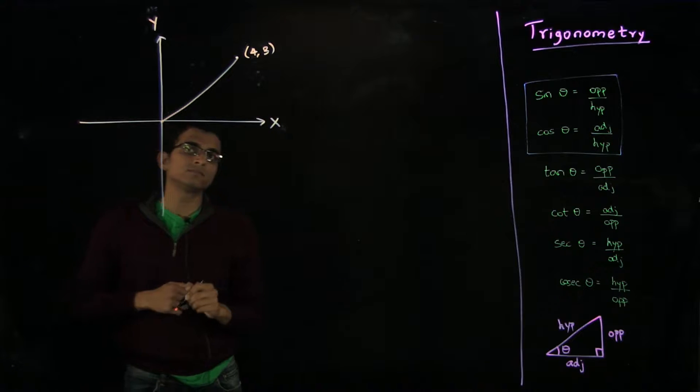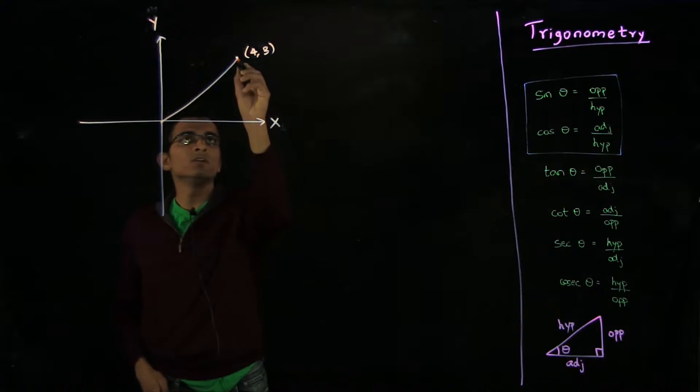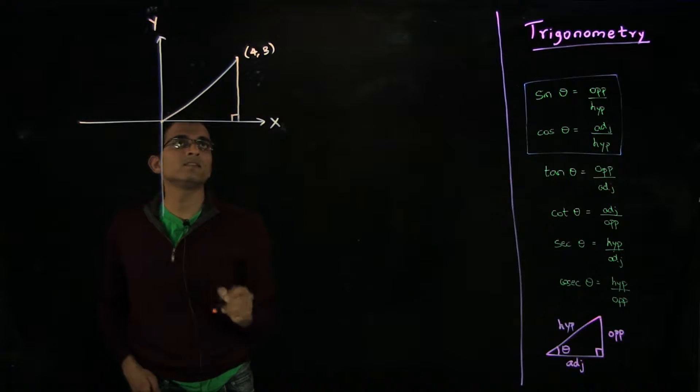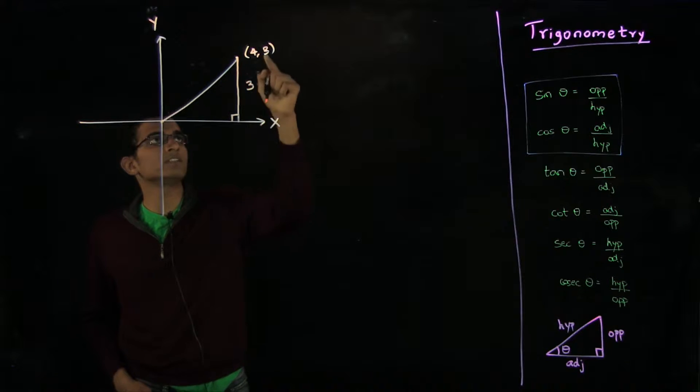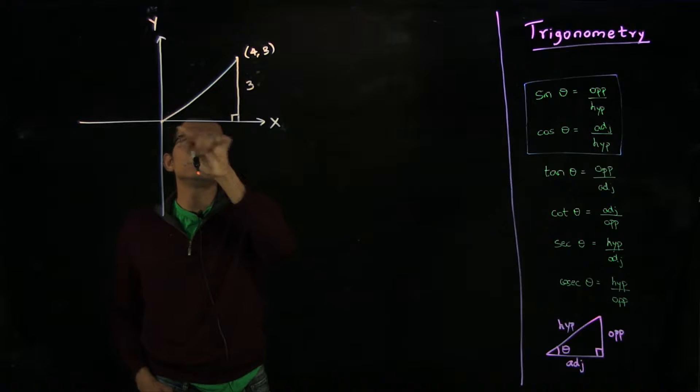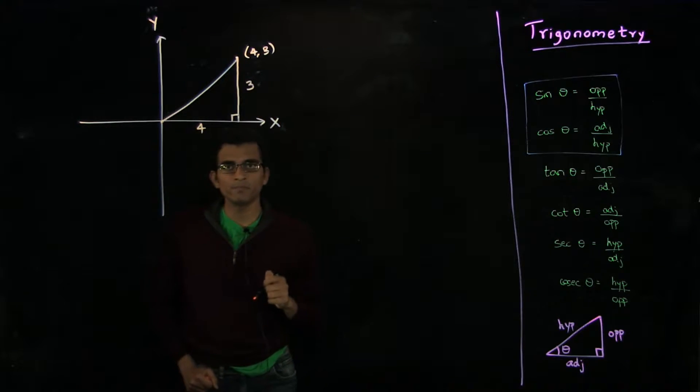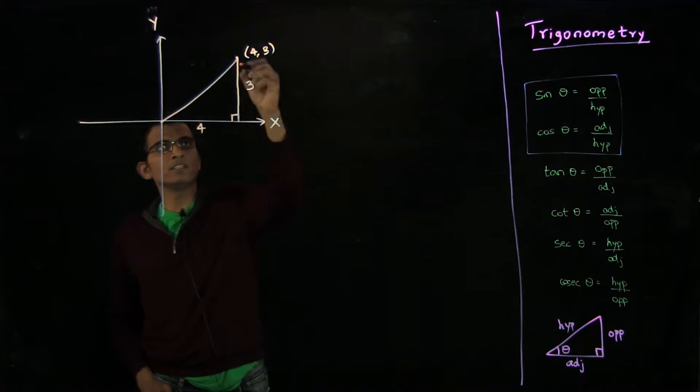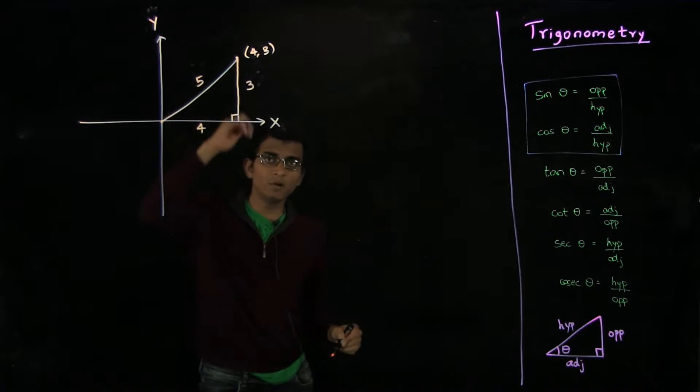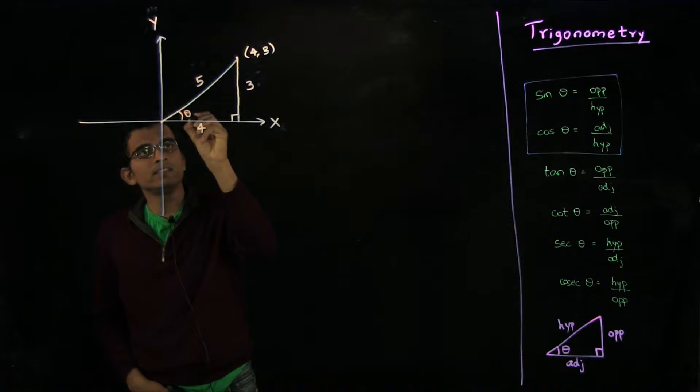Now we can connect this point to the origin. Looking back on the trigonometric ratios, we can drop this perpendicular on the x axis and note that this thing is 3, which is the y coordinate of this point, and this length is 4, which is the x coordinate. By Pythagoras theorem, you can see that the length of the hypotenuse is 5.